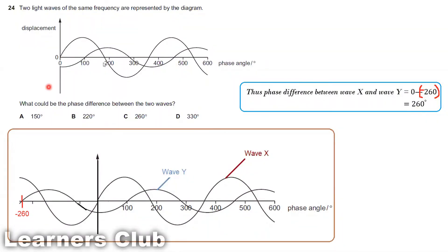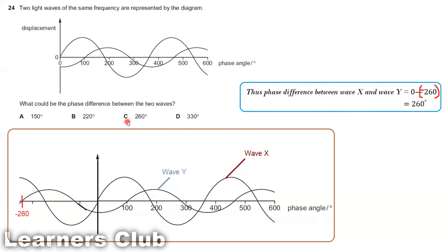To summarize: wave X starts at zero degrees and wave Y starts at 100 degrees, giving an apparent phase difference of 100 degrees — not in the options. So we consider wave Y ending at 100 degrees, meaning it started at minus 260 degrees for a complete 360-degree oscillation. The difference between zero and minus 260 is 260 degrees, so the answer is option C.